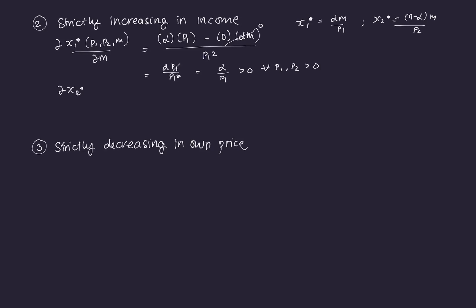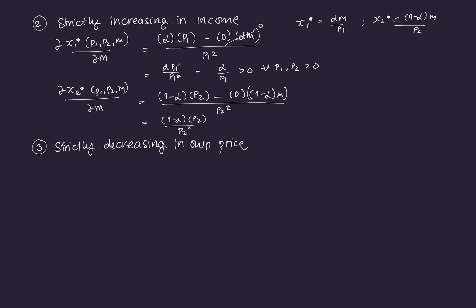Deriving X2* with respect to income: (1−α)·P2 − 0·(1−α)M) / P2² = (1−α)P2/P2² = (1−α)/P2, which is also greater than 0 for all P1, P2 > 0. Since both derivatives are positive, income and demand for a good have a positive relationship — that's another property of a Marshallian demand function.